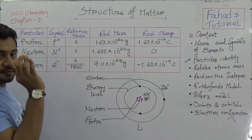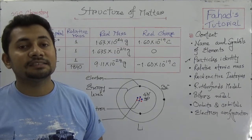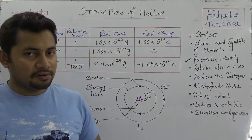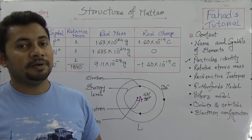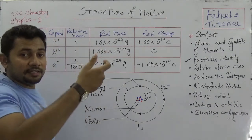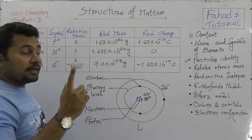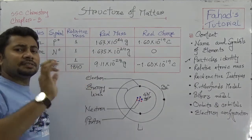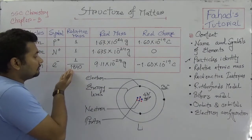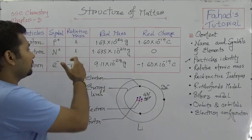If we look at the comparison table for electrons, protons, and neutrons: the proton symbol is expressed as P⁺, indicating it is a positively charged particle. If we set the relative mass of protons and neutrons as 1, then electrons are much lighter — at least 1840 times lighter than protons and neutrons.